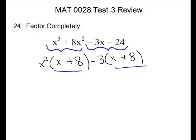So now that is our GCF — the x plus 8, we can take it outside. And to get back just to the line above: for the first term we have x plus 8 outside, we're missing the x squared. For the second term, x plus 8 we have, we're missing the minus 3.